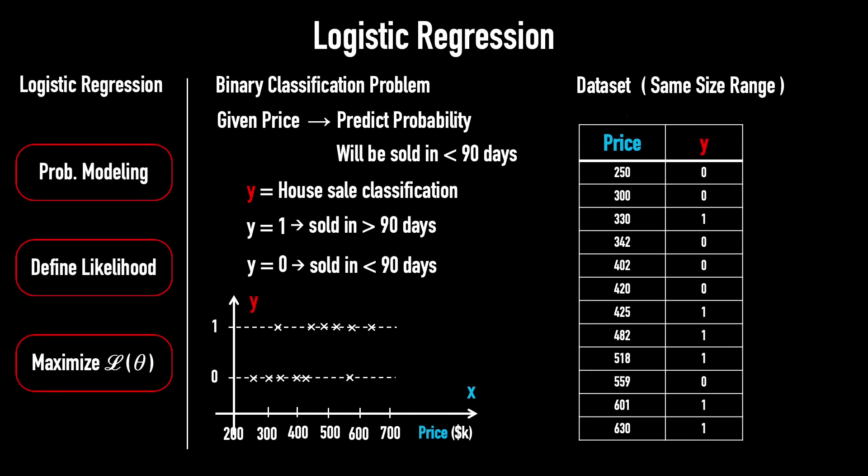Theoretically, you could use linear regression to define a straight line as a hypothesis, like this one. Then, you determine the midpoint here. All houses with prices to the left of this point would have a higher probability of being sold in under 90 days. And all houses to the right would be more likely to be sold in over 90 days.